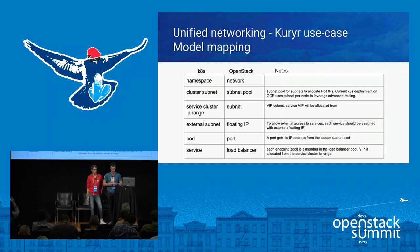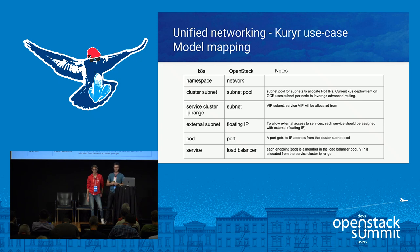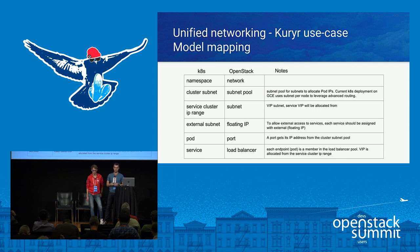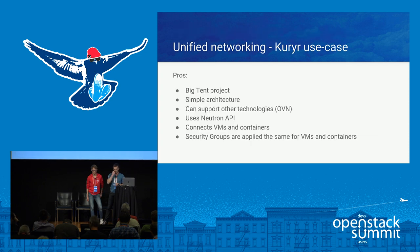The model mapping is important: Kubernetes namespace is mapped to OpenStack network, and the cluster subnet is mapped to a subnet pool — in Kubernetes you can have a /24 or any other subnet connected to each compute node, mapped to the cluster subnet. The service cluster IP range is mapped to HAProxy, i.e., a virtual IP address inside the load balancing subnet. The external subnet is mapped to floating IPs, and a Kubernetes port maps directly to a Neutron port, holding default information about IP and MAC address. The Kubernetes service itself is mapped to the load balancing mechanism inside OpenStack terminology.